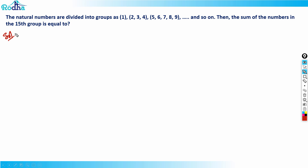Okay, hi guys. Let's look at this question from CAT 2021 Slot 1. Natural numbers are divided into groups: first group contains one element, second group contains three elements, third group contains five elements, and so on. The sum of the numbers in the 15th group is equal to what? So we have first group, second group, third group — and like that, what will the 15th group be?